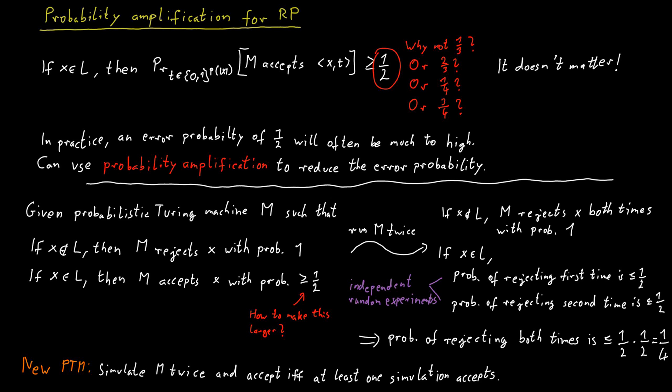Of course, we can extend this principle, and we can reduce the error even more by running this probabilistic Turing machine we had before several times, not just twice, but three times, four times, five times, however many times you like. The more you run it, the less the probability that you make a mistake.